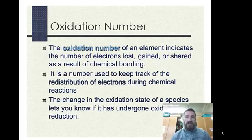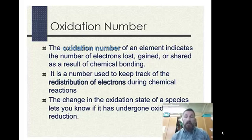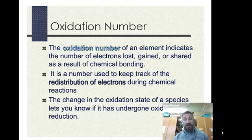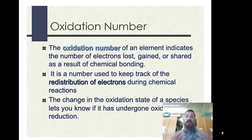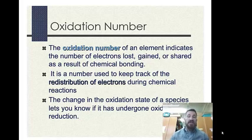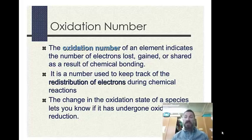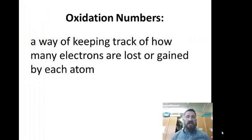What is an oxidation number? It indicates the number of electrons that are either lost, gained, or shared as a result of chemical bonding. There are three types of reactions: acid-base, precipitation, and redox. In redox reactions, electrons are moved, and oxidation numbers help us keep track of those electrons. A change in oxidation state in a reaction tells you that you have an oxidation-reduction reaction.